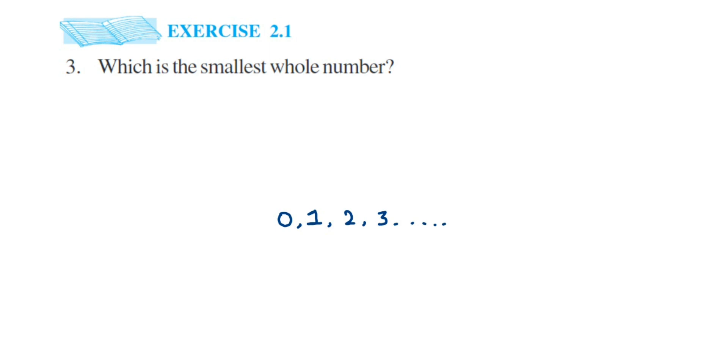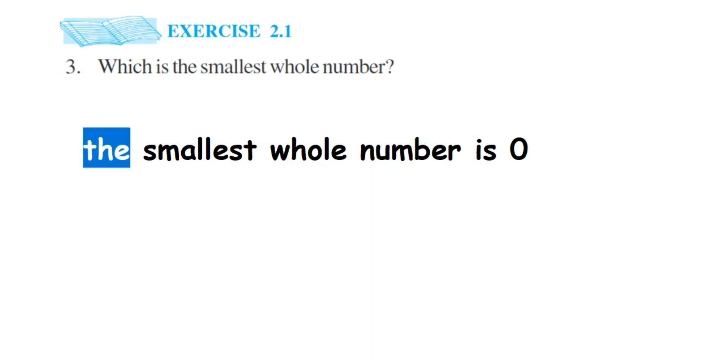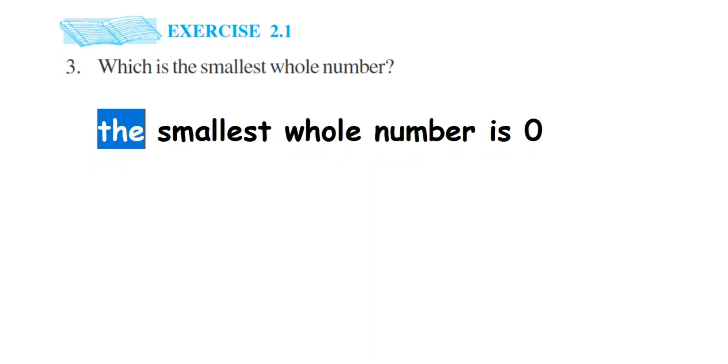They're asking what is the smallest whole number, so the smallest whole number will be zero. So let's write that down. Therefore, the smallest whole number is zero because the whole number starts from zero.